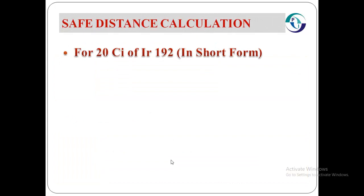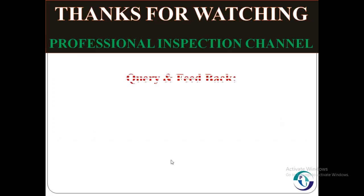For 20 Curie of Iridium-192 in short form, D2 will be 25.3 × √20, so the safe distance is equal to 113.14 meters, as we calculated before.